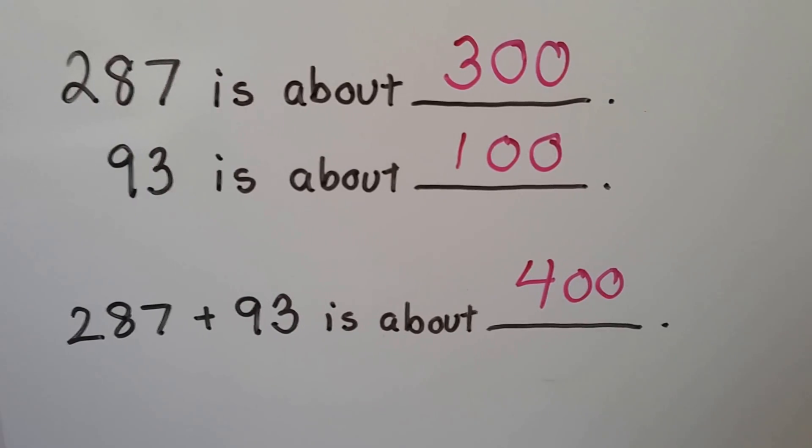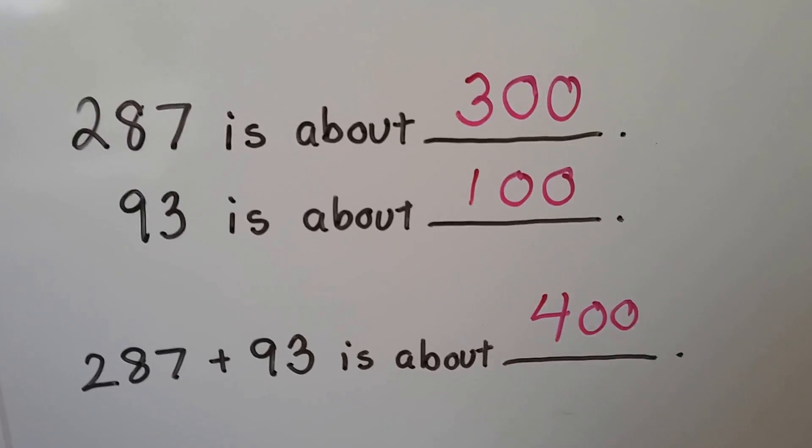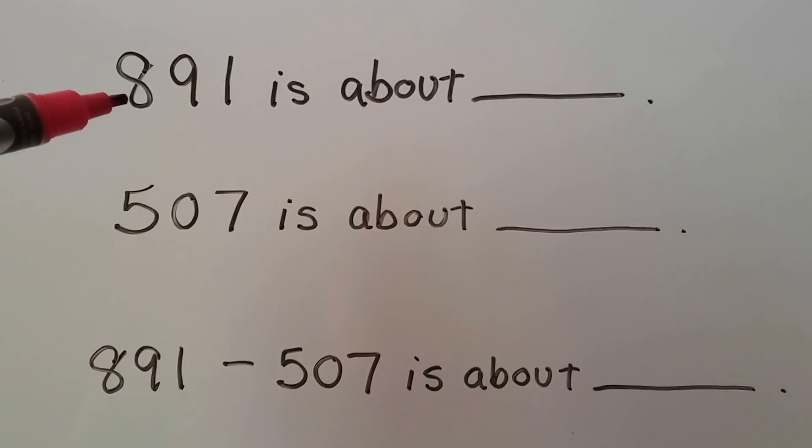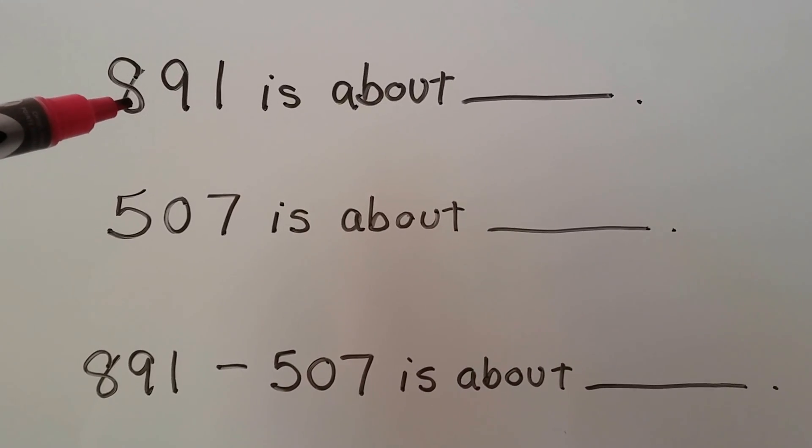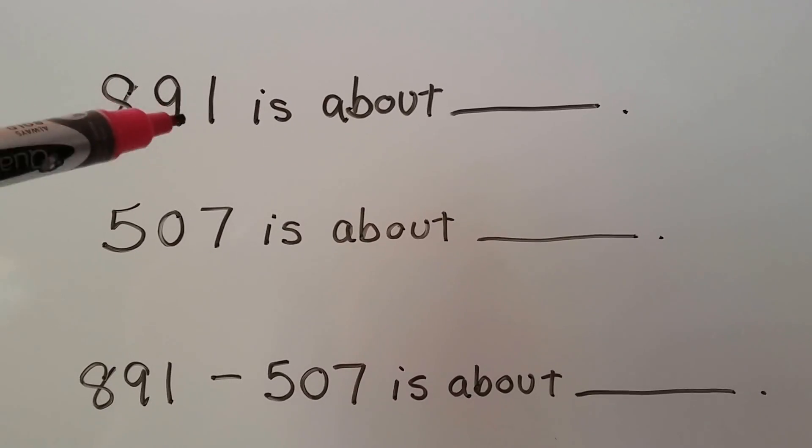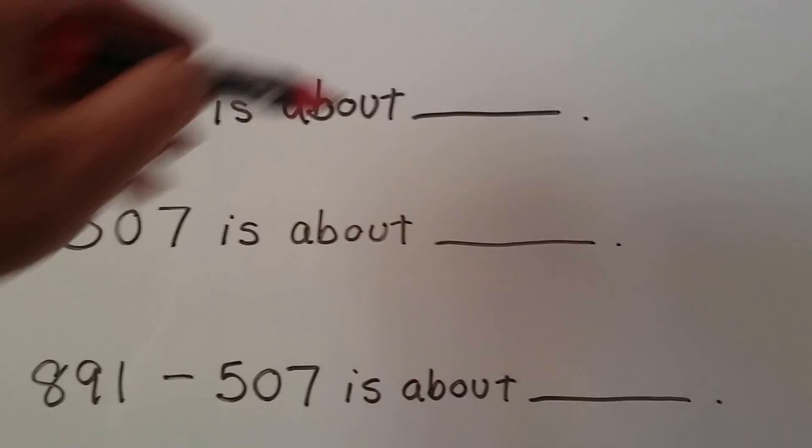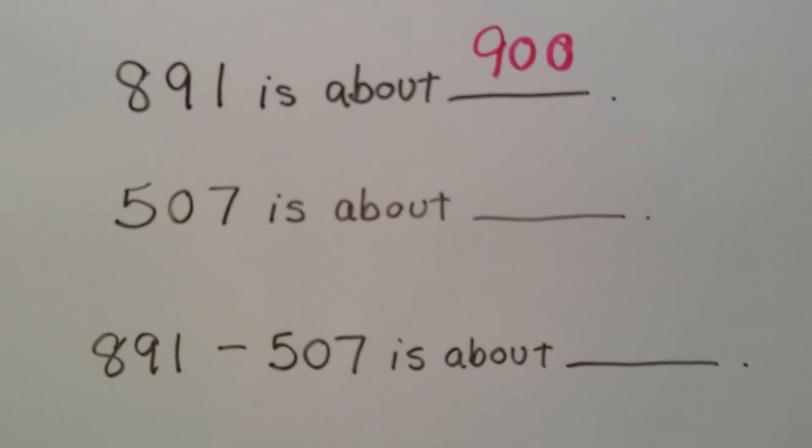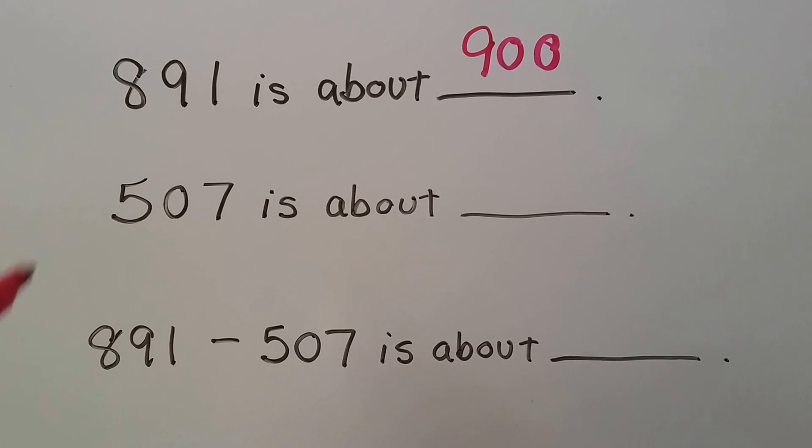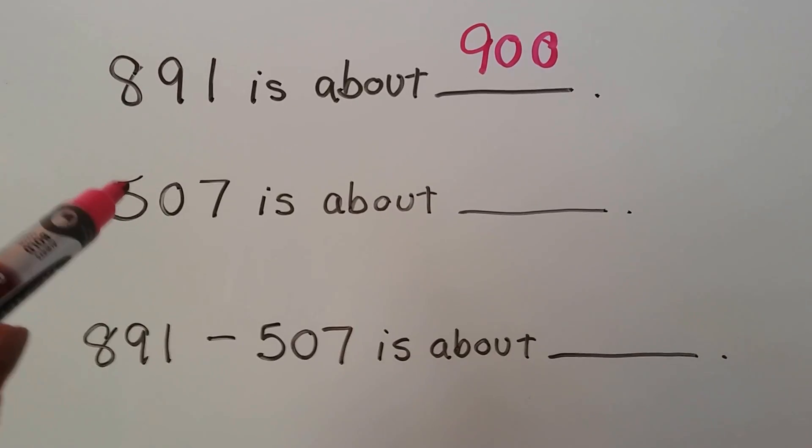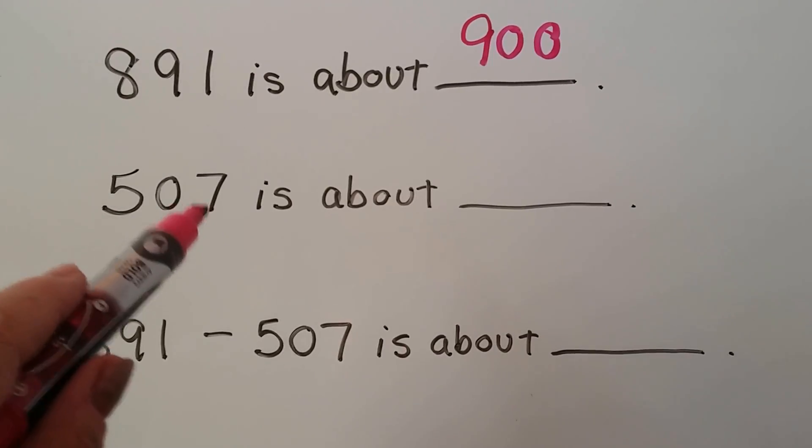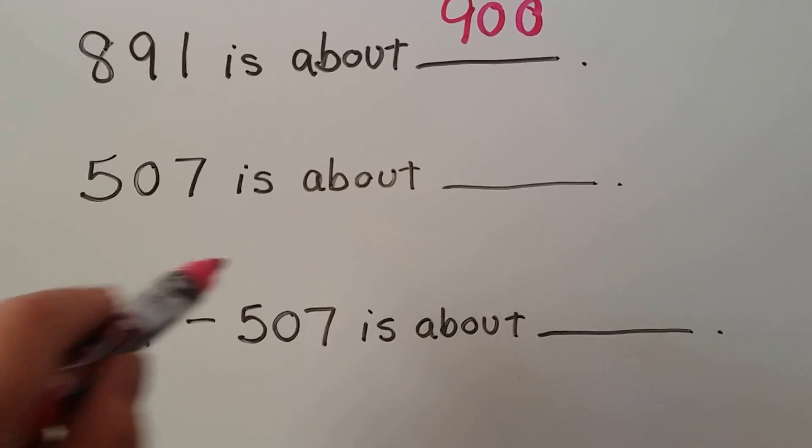Let's try some subtraction. We have 891. Is this closer to 800 or 900? Well that 91 is pushing it closer to 900. We could use a number line if we need to. Is 507 closer to 500 or 600? Well that's not very many more than 500, that's 7, so it's closer to 500.